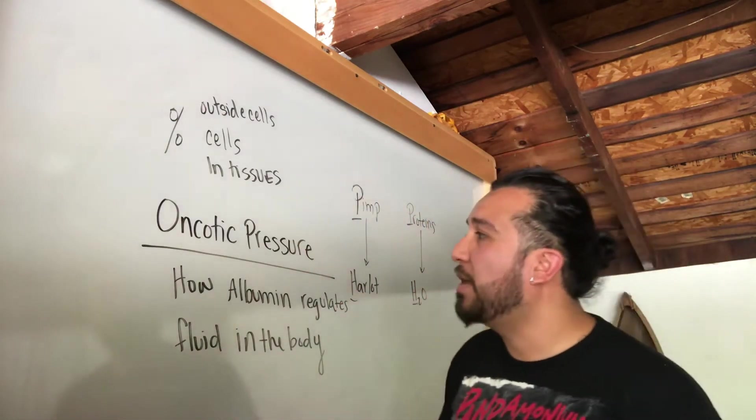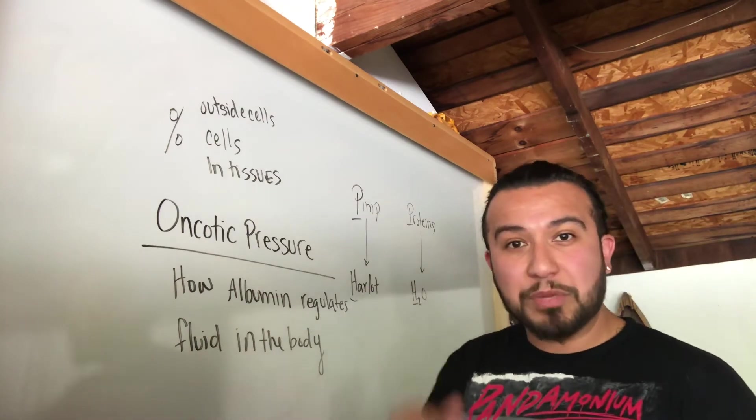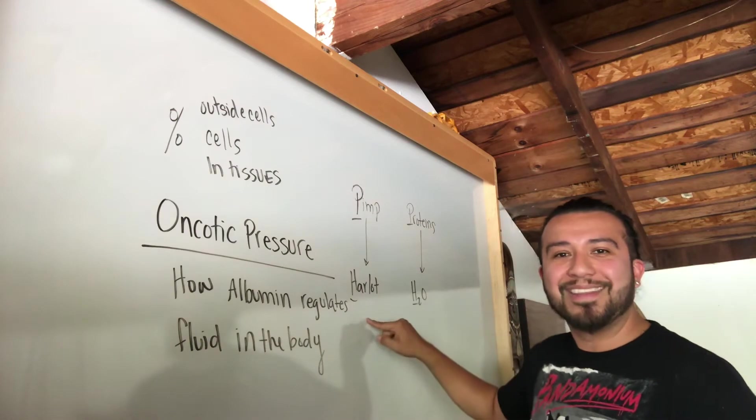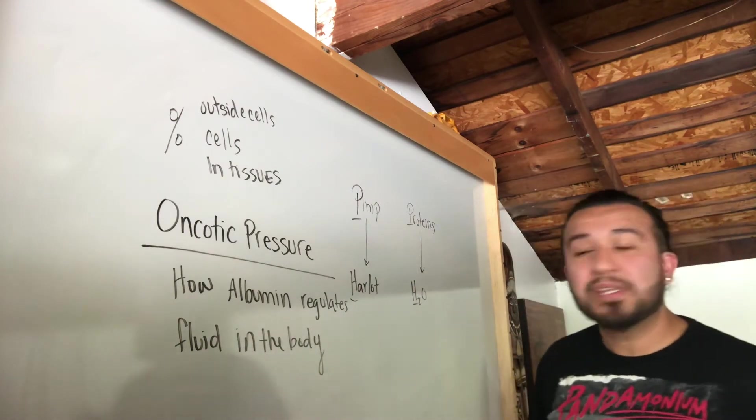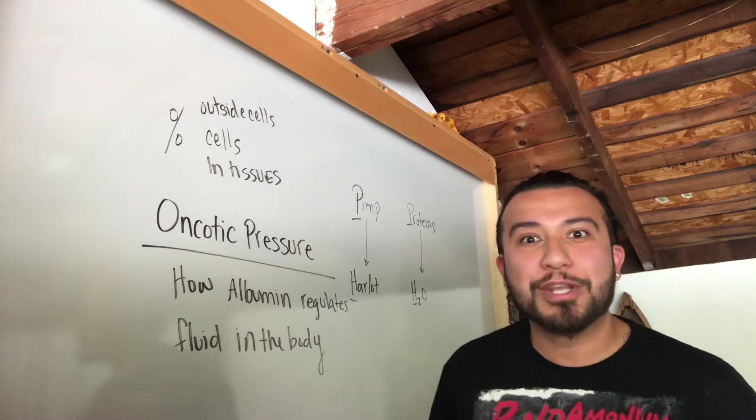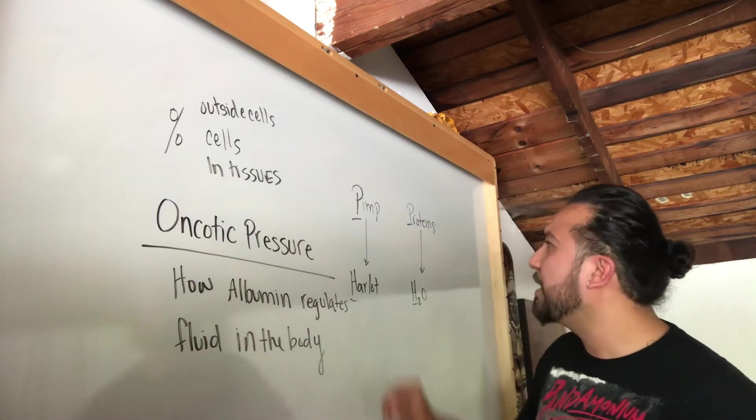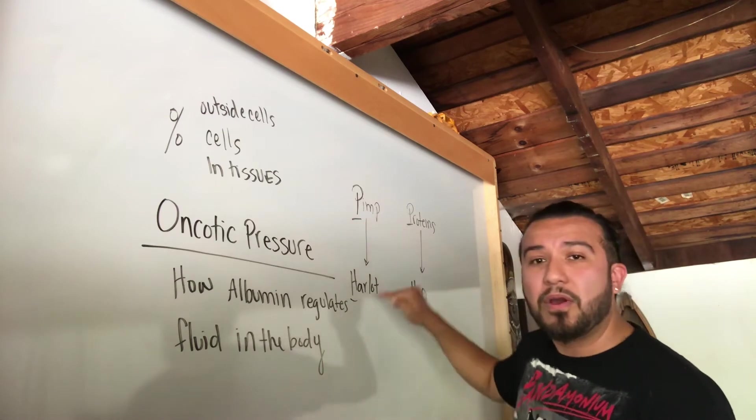So what I'm going to talk about right now is how you can memorize the relationship between those two things. Well what I use is something called a pimp and a harlot. I think we all know what a pimp is. A harlot is for those of you that don't know, look it up. But essentially it's a prostitute. What I like to talk about is the pimp and the harlot.